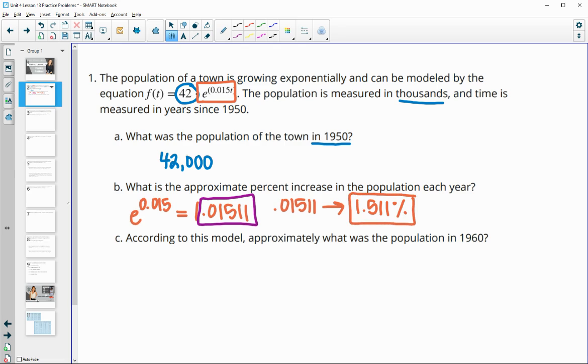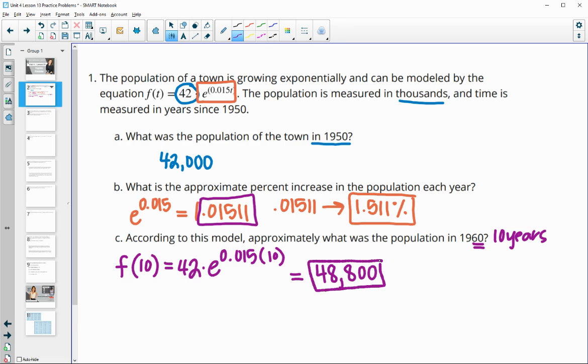According to this model, what was the population in 1960? Now we're just going to take this equation or this function here, and we're going to plug in 10 since 1960 is 10 years since 1950. So 1950 was the year 0, so 1960 will be year 10. And so we'll do f of 10, so this is going to be 42 times e to the 0.015 times 10. And when you type that into your calculator, you'll get back 48.8. And then remember that this is in thousands, so then this will actually be 48,800 for the population.